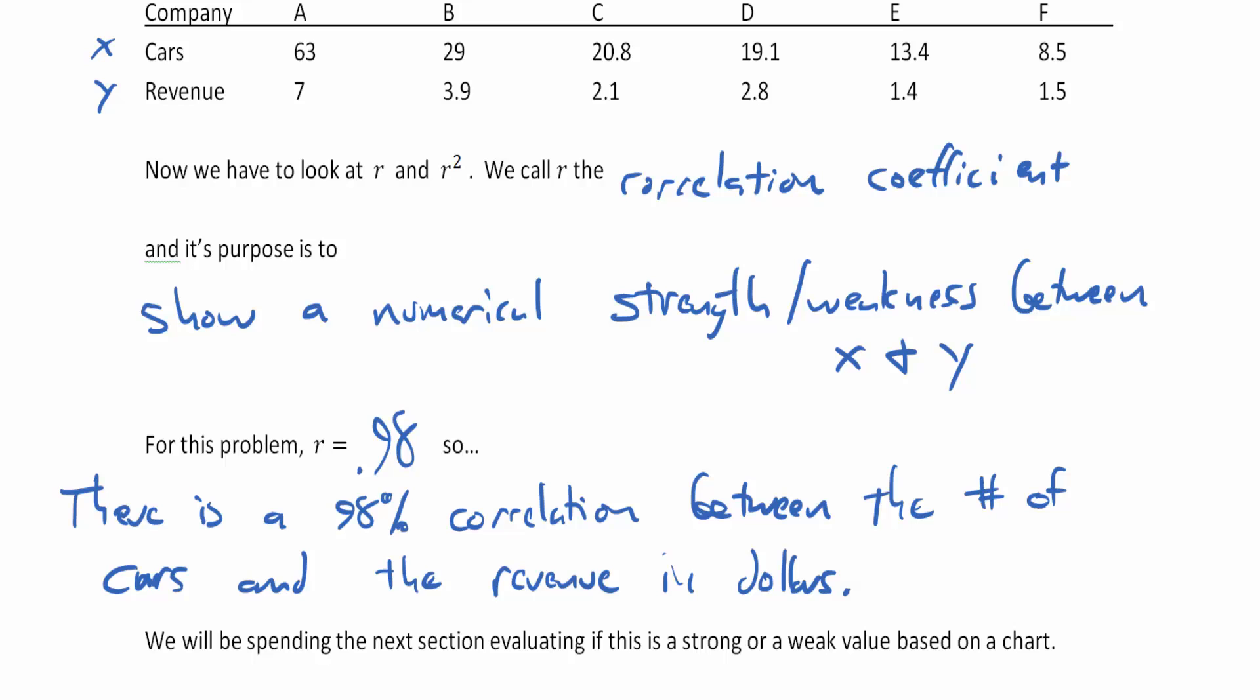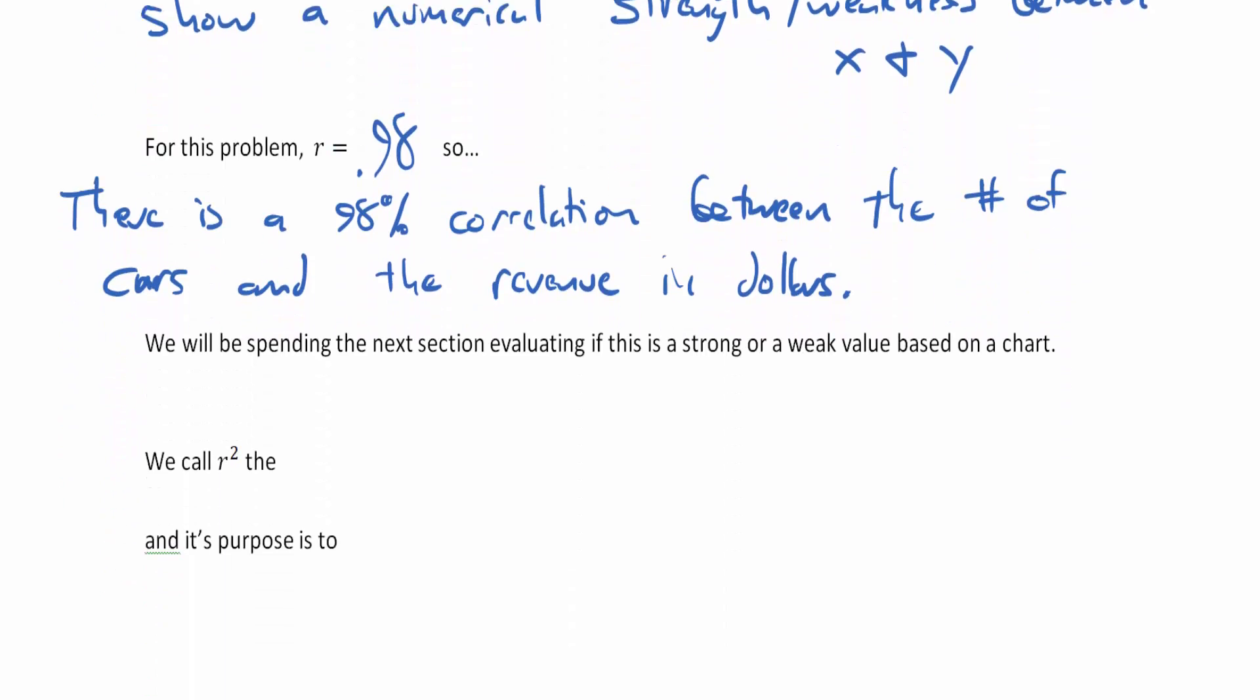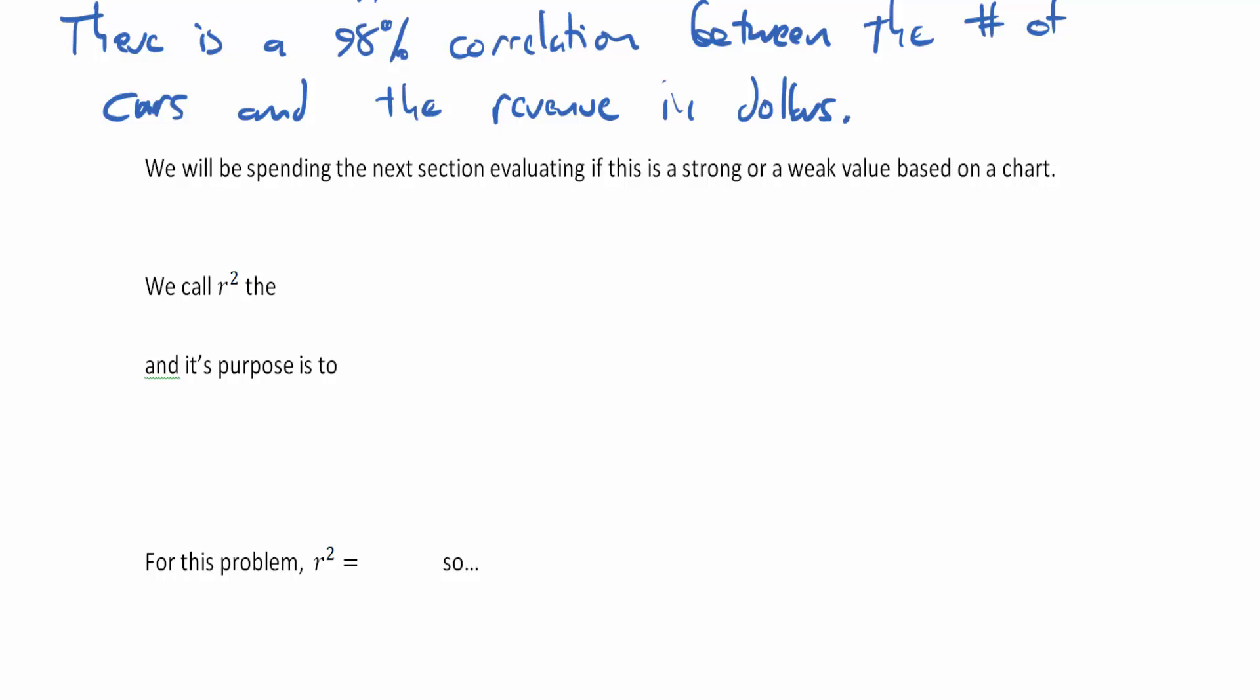Now what we're going to do in the next section, so in our next section of the chapter that we're in, is we're going to spend time evaluating if 98% is weak or strong. I mean I can tell you it's strong, but you know we're going to have some less robust R values in the next unit. So as we do our hypothesis testing with R, we're going to be seeing which is weak and strong. So we're going to also do that based off a chart. In two videos we're going to need you to download a chart from my Moodle page.